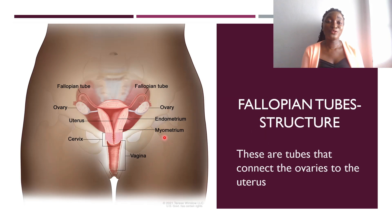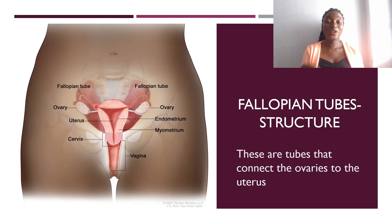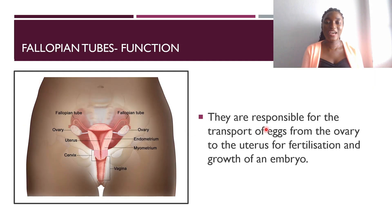The fallopian tubes connect the uterus to the ovaries. The fallopian tube is also referred to as the oviduct — a duct is a tube, and the oviduct is the tube for the ova, which are the eggs. The fallopian tube is usually where fertilization occurs: the egg cell released from the ovary enters the fallopian tube and is met by a sperm cell. A successful sperm cell fertilizes the egg to form a zygote, which then implants in the uterus. The fallopian tube is responsible for transporting eggs from the ovary to the uterus for fertilization and embryo growth.